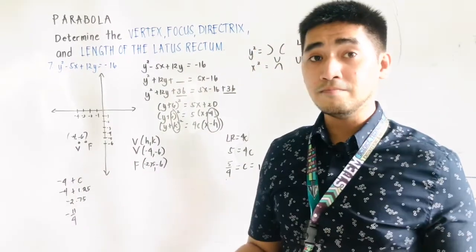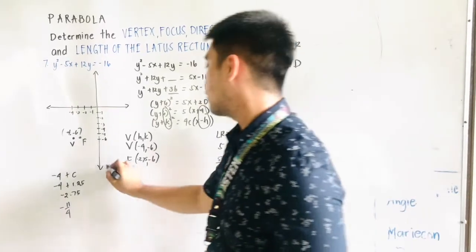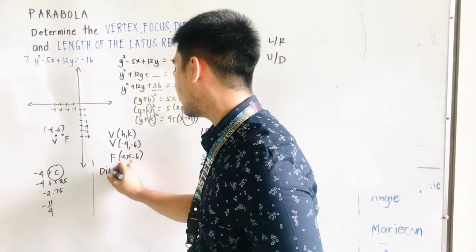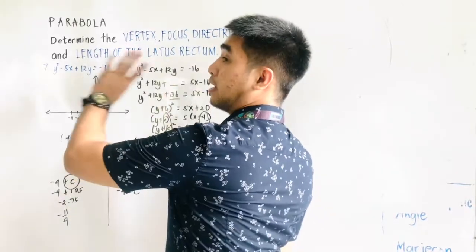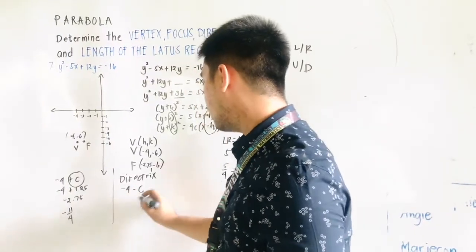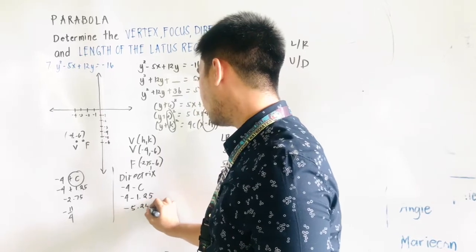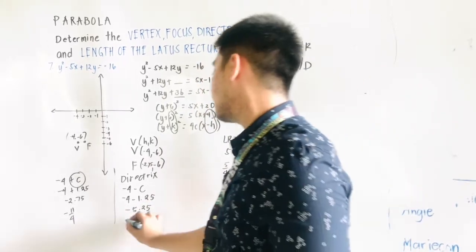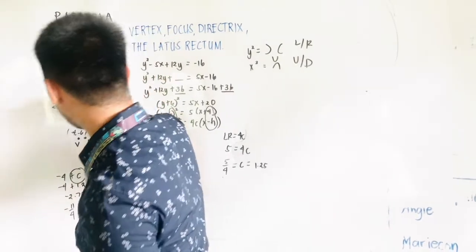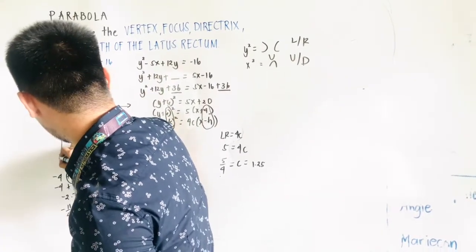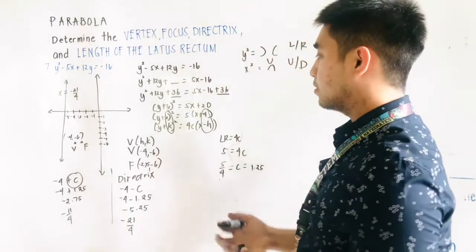Now we determine the directrix. Since the parabola opens to the right, the directrix is to the left of the vertex. We subtract c from the x-coordinate of the vertex: −4 − 1.25 = −5.25, which equals −21/4. Therefore, the directrix is the vertical line x = −21/4, or x = −5.25.